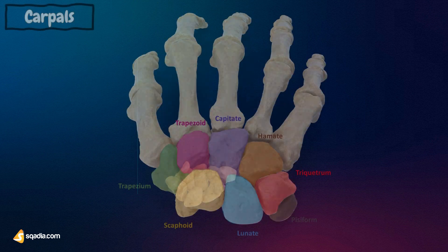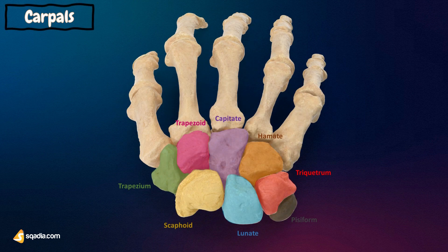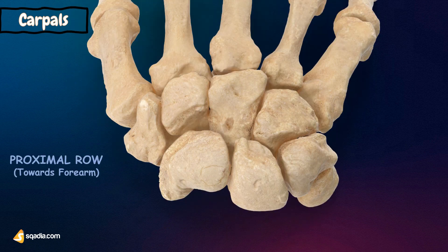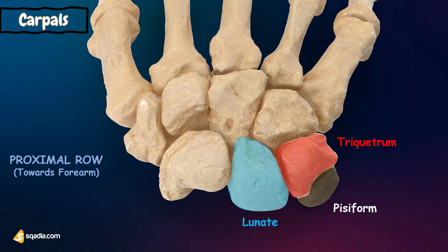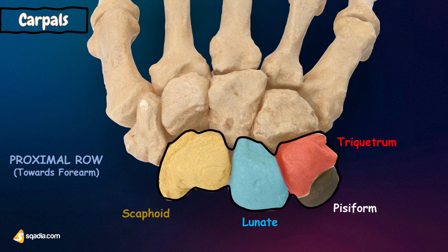The most proximal part, the carpus, is formed from eight small bones collectively referred to as the carpal bones. The carpal bones are bound in two groups of four bones. The proximal group consists of the pisiform, triquetrum, lunate, and scaphoid, on the upper end of the wrist.